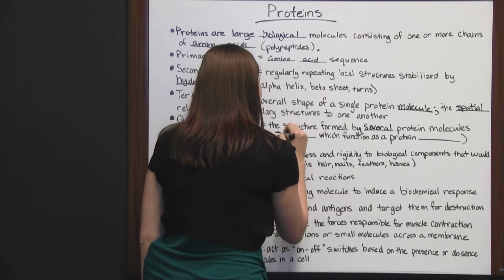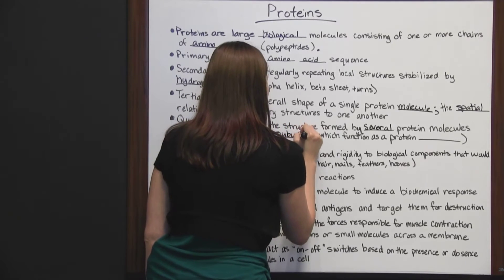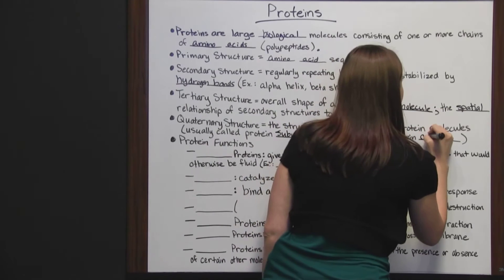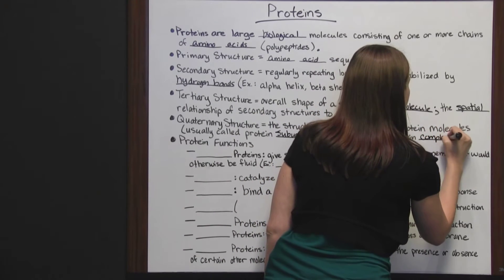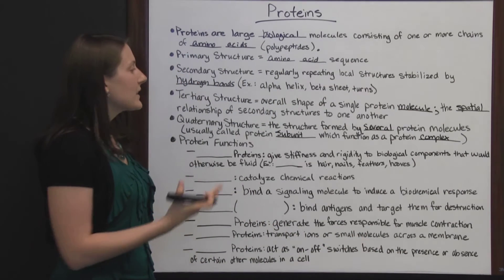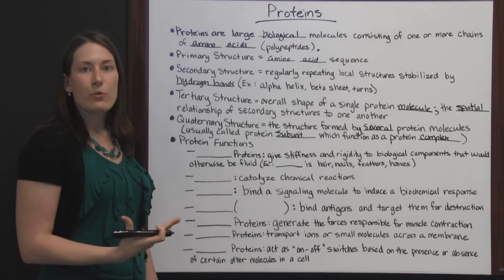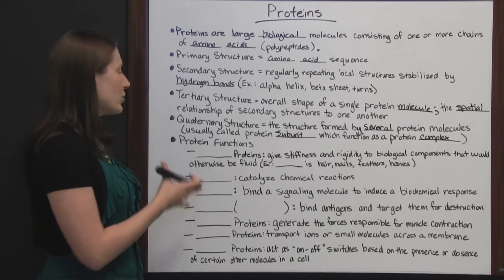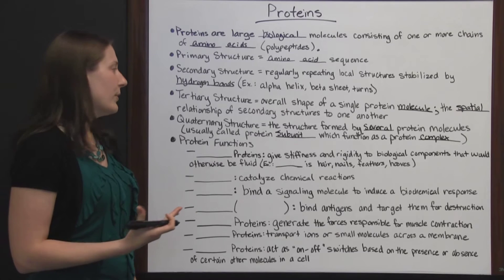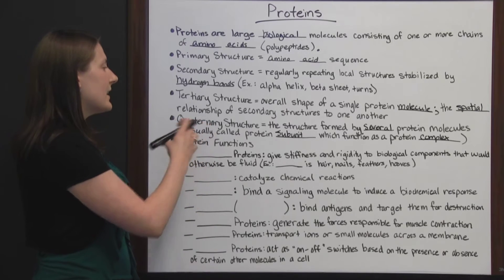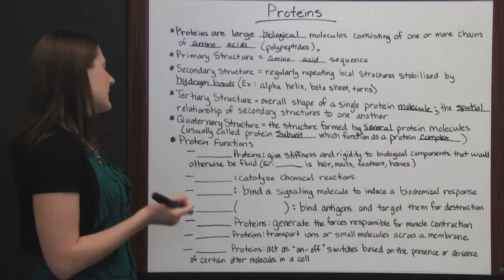This is usually called a protein subunit. It's no longer one molecule, it's multiple molecules. It's a subunit which functions as a protein complex. It's going to be more complex. It's going to be able to process more complex functions. A lot of the time what you're going to see is the quaternary structure of a protein because you have lots of them together and they are drawn toward each other and then they bond.